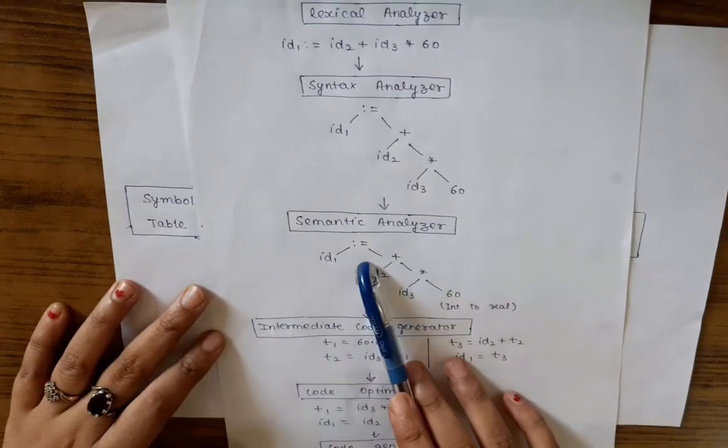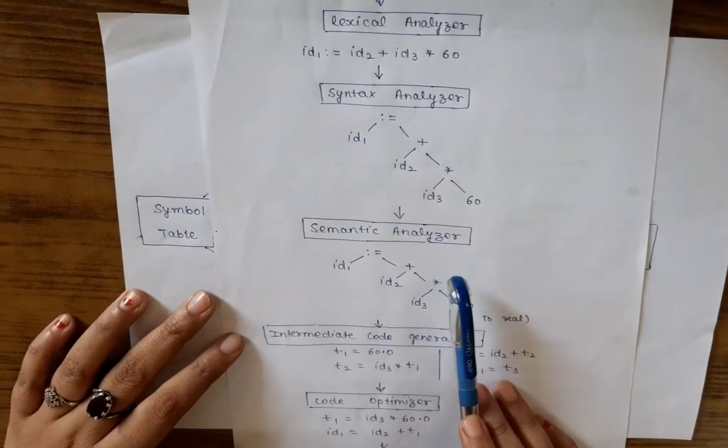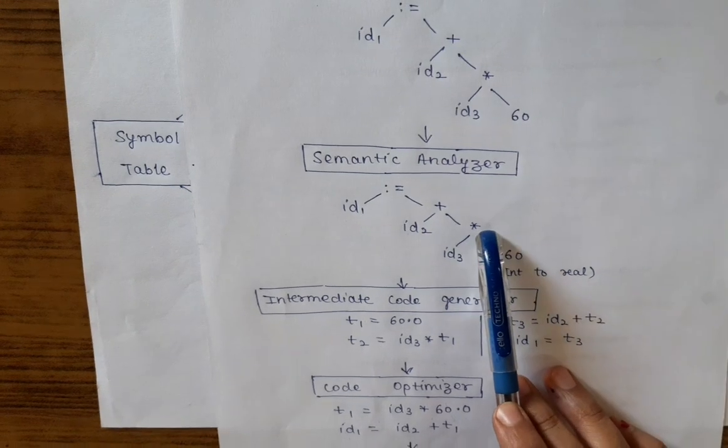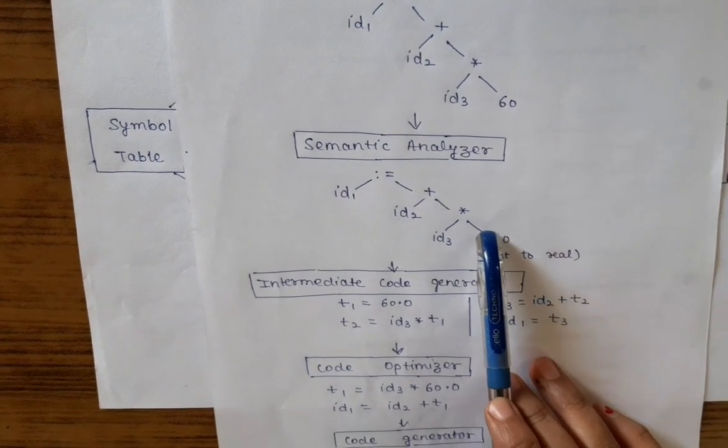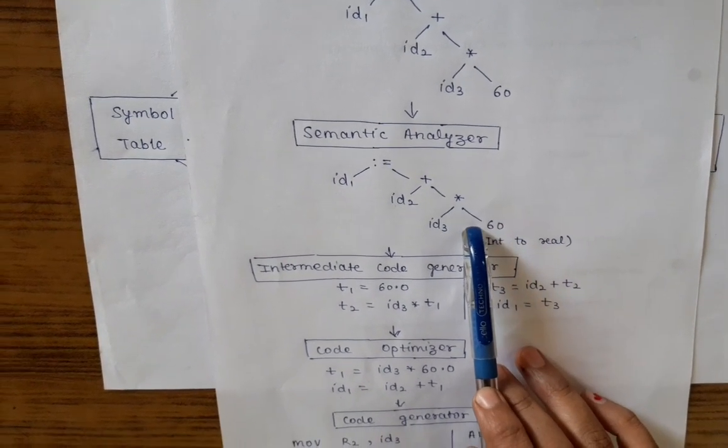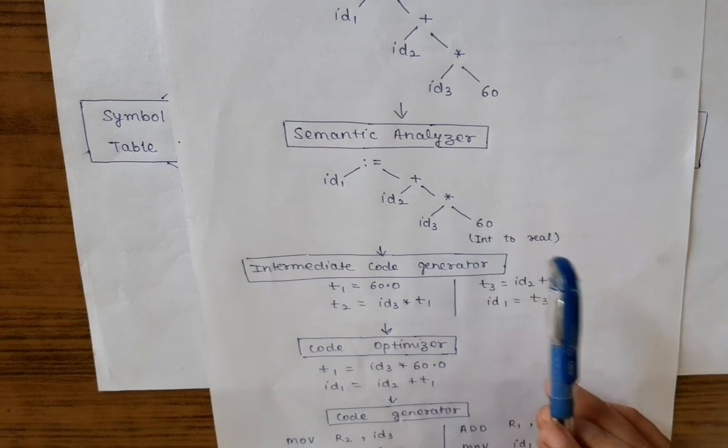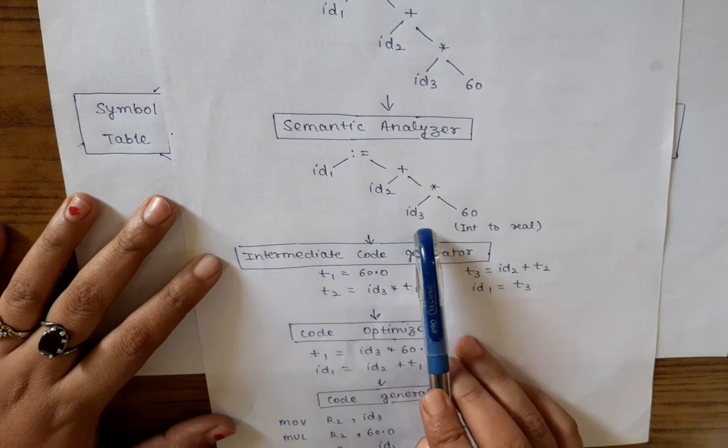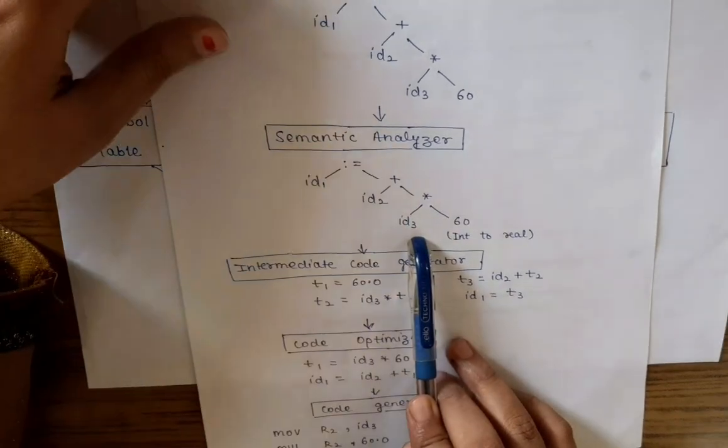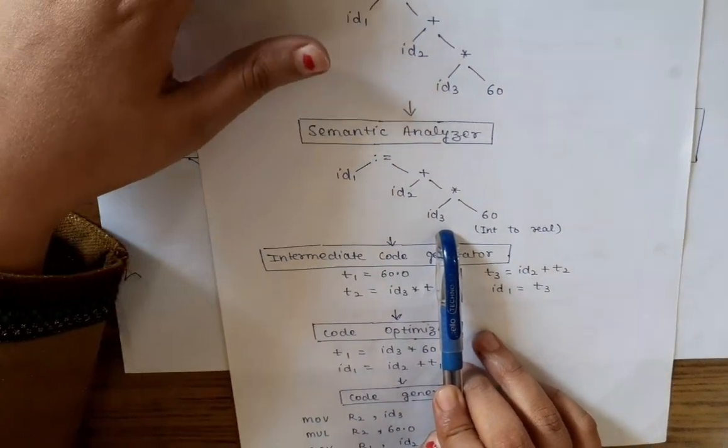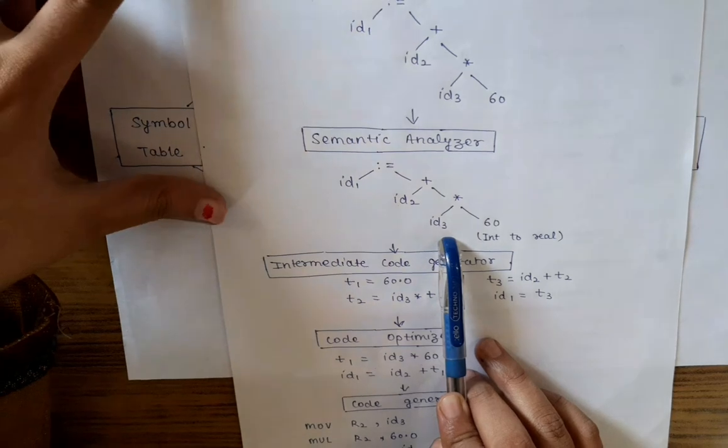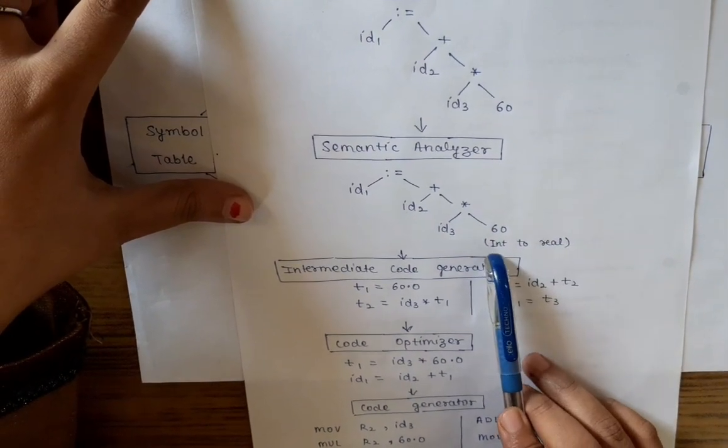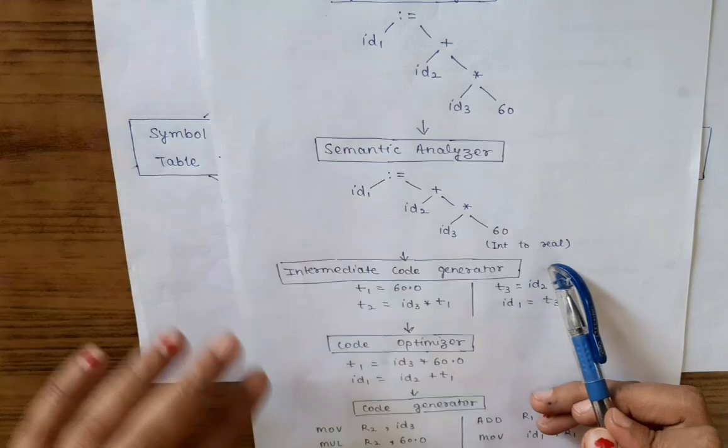The next phase is semantic analyzer. In this phase, the main function is the conversion, the type conversion. It also recognizes the syntactic structure produced by the syntax analyzer. Here identifier 1, identifier 2, identifier 3. These are the identifiers of A, B and C. A, B, C are real values, so here we need to convert the 60 from integer to real. Hence semantic analyzer converts 60 into real.